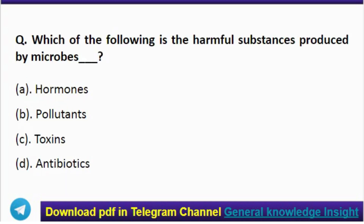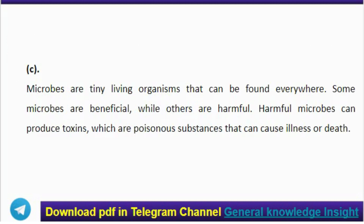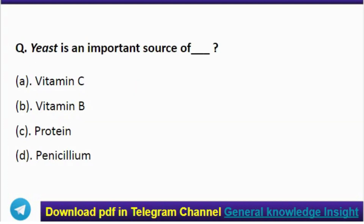Next question: which of the following is a harmful substance produced by microbes? Correct answer: option C, toxin. Microbes are tiny living organisms that can be found everywhere. Some microbes are beneficial while others are harmful. Harmful microbes can produce toxins, which are poisonous substances that can cause illness or death.